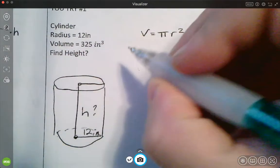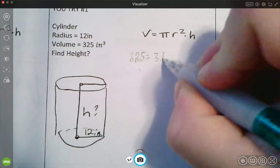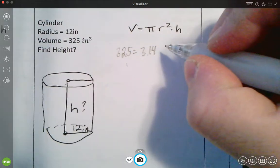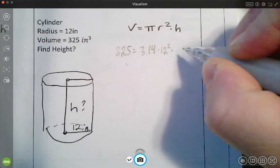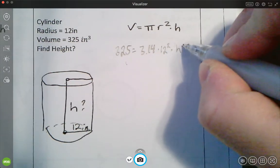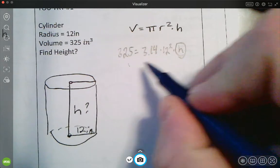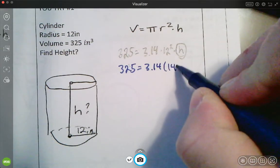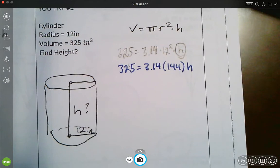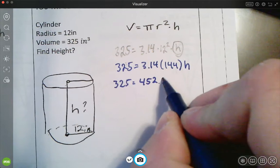So again, plug in everything you know. So the volume is 325. We know pi is 3.14, and we know that the radius, of course, is going to be, in this case, times 12 squared, and we're trying to find the height. So we're going to leave that a variable. Okay, so now we're going to get, we can do 12 squared. So 325 equals 3.14 times 144 times the height. You multiply those two things. You get 3.14 times 144 is 452.16 height.